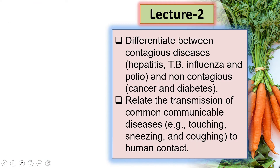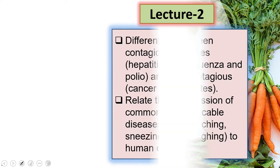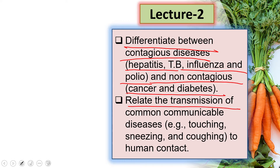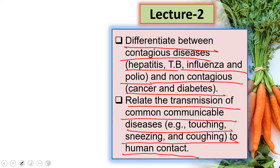In Lecture Number 2, students will be able to differentiate between contagious diseases — like hepatitis, TB, influenza, and polio — and non-contagious diseases like cancer and diabetes. They will also relate the transmission of common communicable diseases, such as touching, sneezing, and coughing, to human contact.